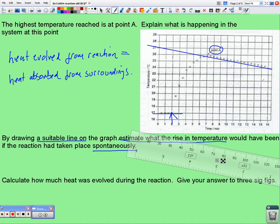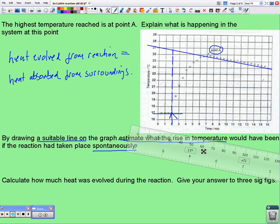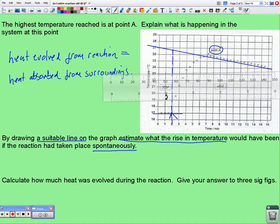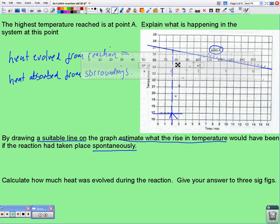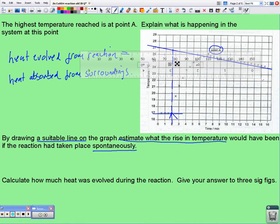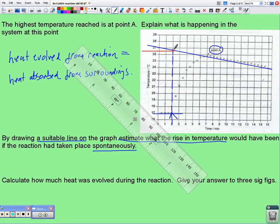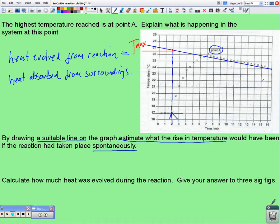And then I can see that at this point here, I move across to my axis, at that point there. Oop, I've missed it slightly, haven't I? That line should really be just here, at that point. And it should have moved across to the axis to give me my maximum temperature that I should have received, should have had, if everything had reacted spontaneously.